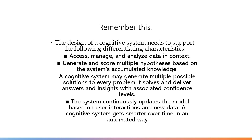The system continuously learns and continuously updates the model based on user interactions. You teach it, you train it, you feed input — it's like how ChatGPT learns from you. The system evolves continuously. A cognitive system gets smarter, stronger, and builds up its data over time in an automated way and gets itself updated. That's the beauty — a cognitive system never stops learning; it continuously evolves and that's a very important feature of the cognitive system.